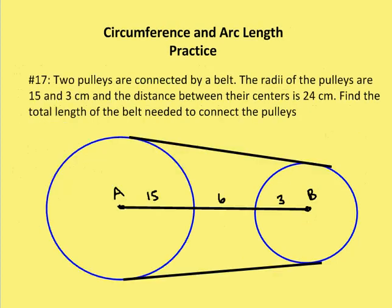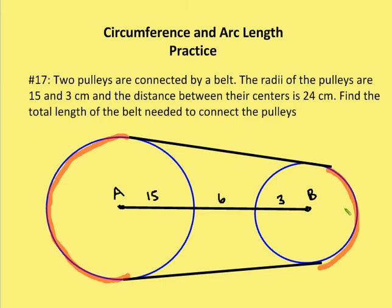Next problem: two pulleys are connected by a belt. The radii of the pulleys are 15 and 3 centimeters, and the distance between their centers is 24 centimeters. We need to find the total length of the belt needed to connect the pulleys. We want to find the two tangent segments — they'll both be the same length — and then we want to find the arc length around each circle, and add everything together.